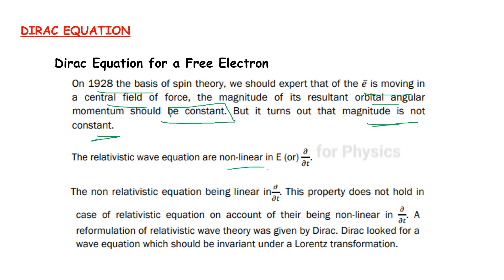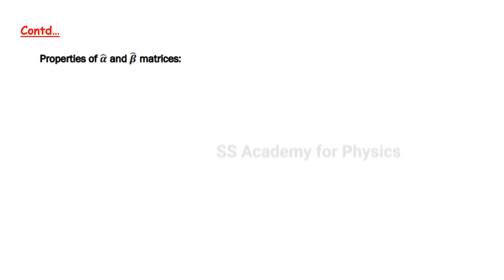So reformulation of relativistic wave theory was given by Dirac. Dirac looked for a wave equation which should be invariant under a Lorentz transformation. This is a very important point. Then we consider the properties of alpha and beta matrices — we need to know what the Dirac matrices are.